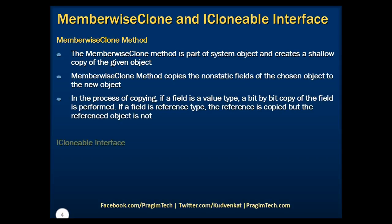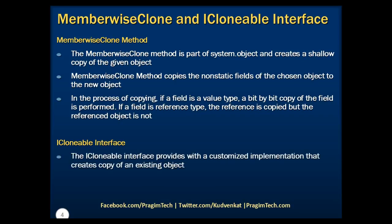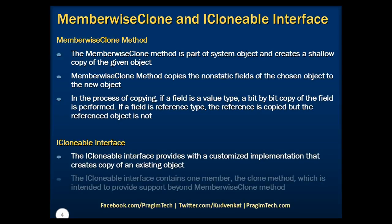If you have viewed the previous session, you can recollect that we demonstrated value type copying as well as reference type copying. We strongly recommend you view the previous session of the tutorial before proceeding. Now let's understand the ICloneable interface. The ICloneable interface provides a customized implementation that creates a copy of an existing object. ICloneable interface contains one member, which is the Clone method, and that Clone method is intended to provide support beyond MemberwiseClone.